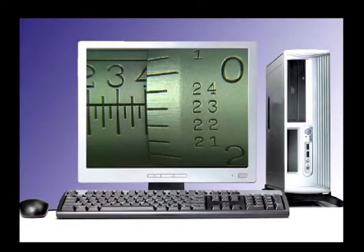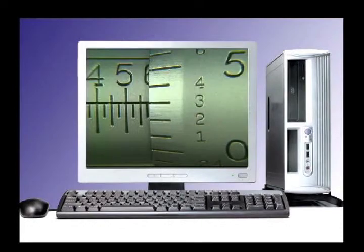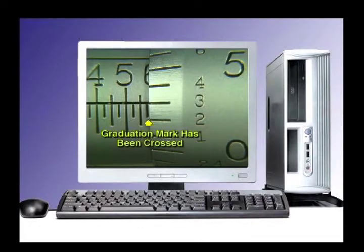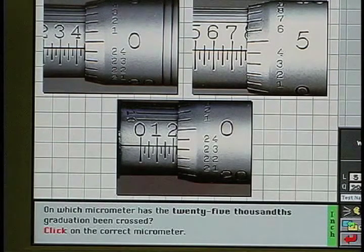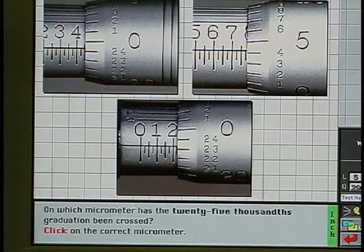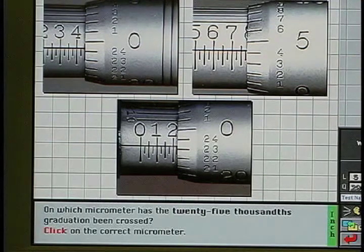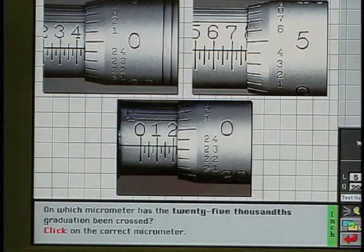the course seeks to eliminate common mistakes as well. For example, the twenty-five thousandths error, which commonly occurs when reading a mic, is addressed specifically in the instruction. If the thimble scale is reading in the lower range, anywhere from zero to five, you have crossed the twenty-five thousandths graduation. And tested thoroughly within the CD-ROM. On which micrometer has the twenty-five thousandths graduation been crossed? Click on the correct micrometer.